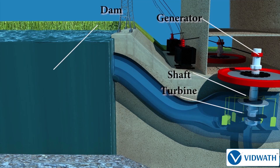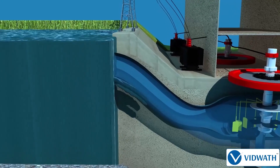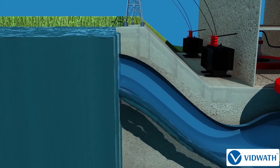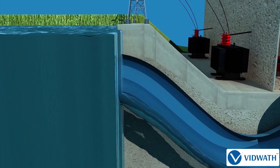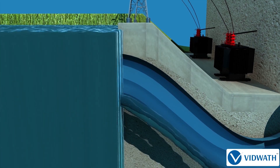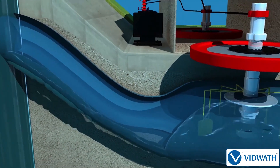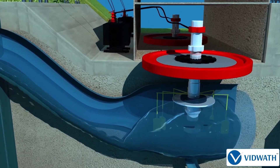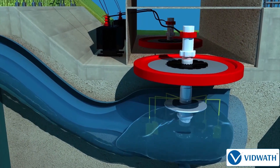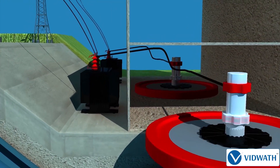Water flows down through pipes from the top of the dam to the generator house below. It strikes the blades of a water turbine with tremendous speed, making it rotate. The turbine rotates the shaft of a generator to which it is connected, making the generator produce electricity.